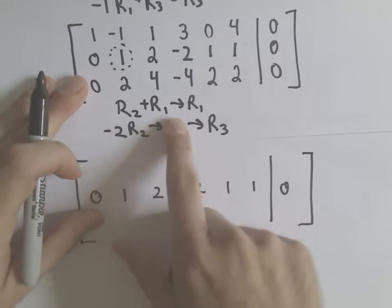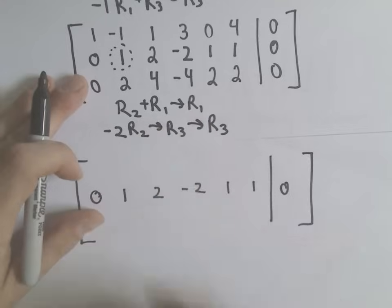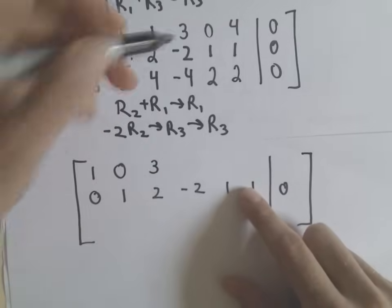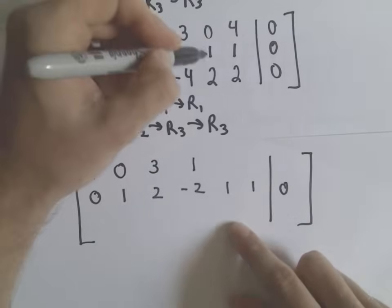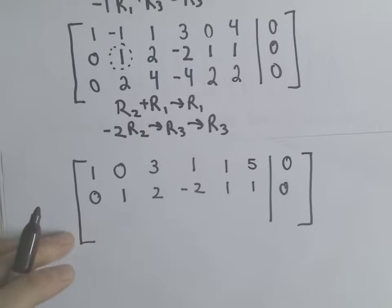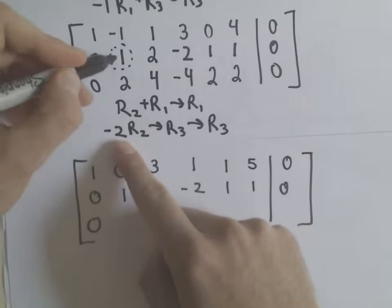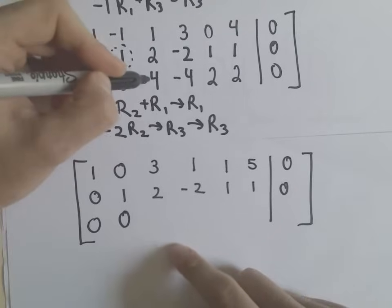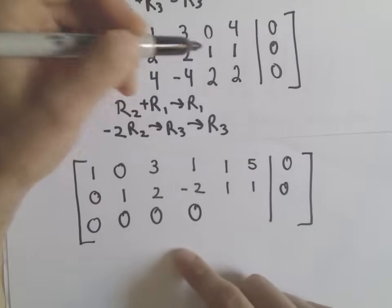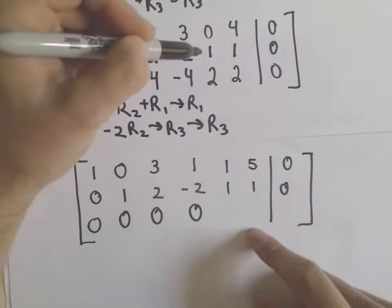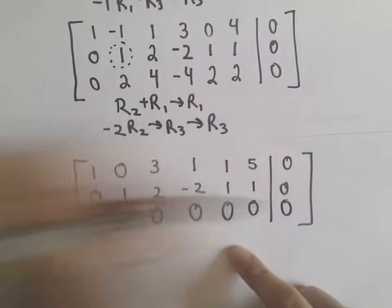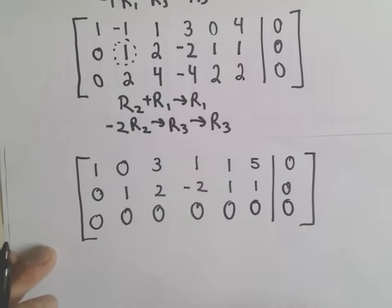So let's do the first operation, which is just adding row 2 and row 1 and replacing row 1. So 0 and 1 is 1. 1 and negative 1 is 0, as we wanted. 2 and 1 is 3. Negative 2 and 3 is 1. 1 and 0 will be 1. 1 and 4 is 5. And then we have a 0. So negative 2 times 1 plus 2 is 0. It looks like we'll have negative 4 plus 4, which is 0. Negative 2 times negative 2 will be 4 minus 4, which is 0. Notice these are basically multiples of each other. We'll have negative 2 plus 2, which is 0. Another negative 2 plus 2, which is 0. The last row is all 0s. That's okay. This is now in reduced echelon form.